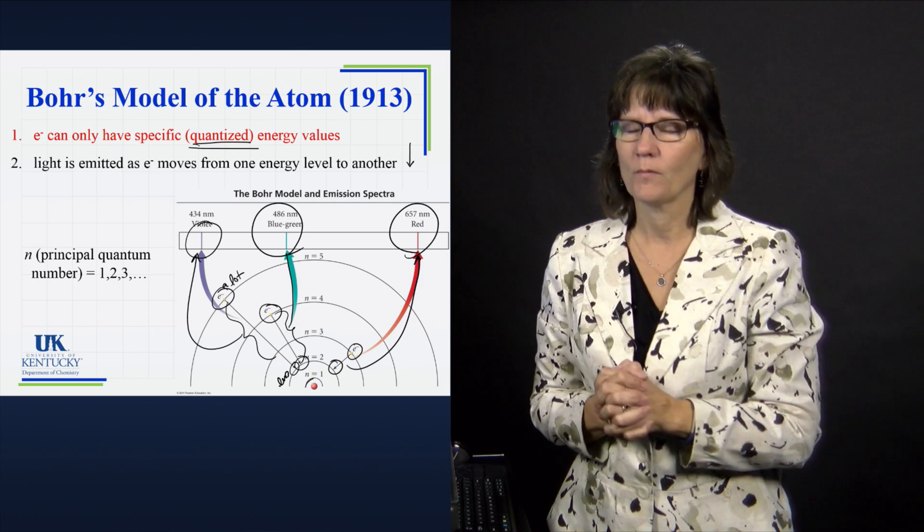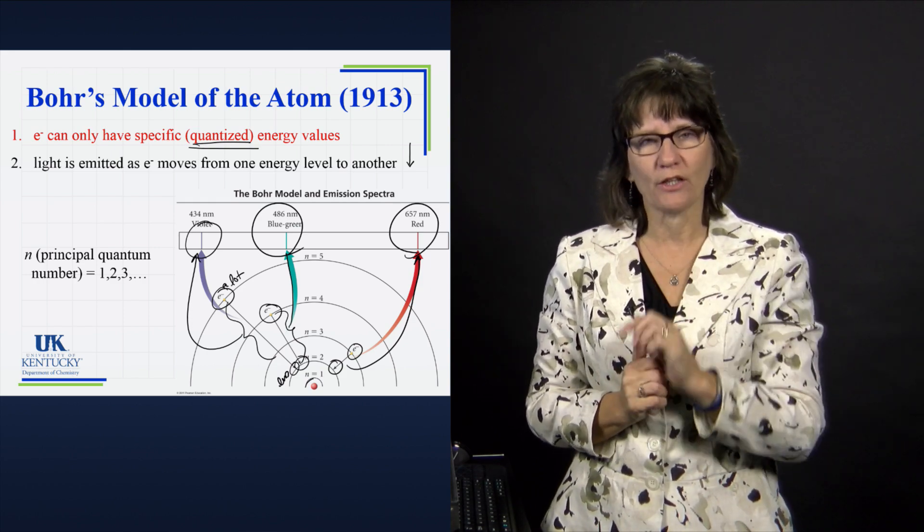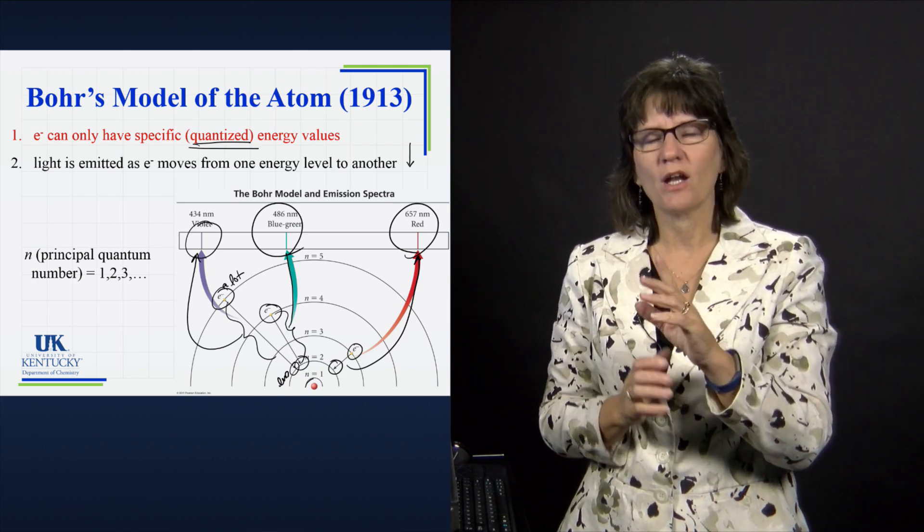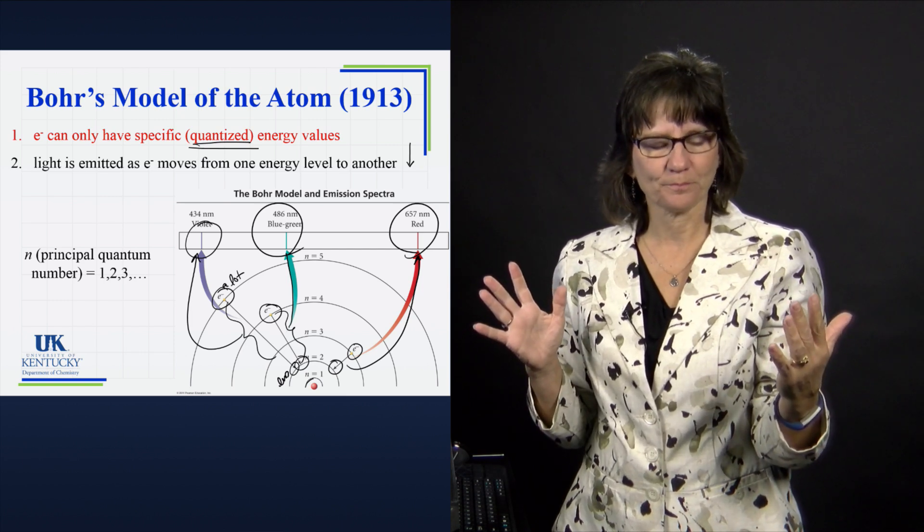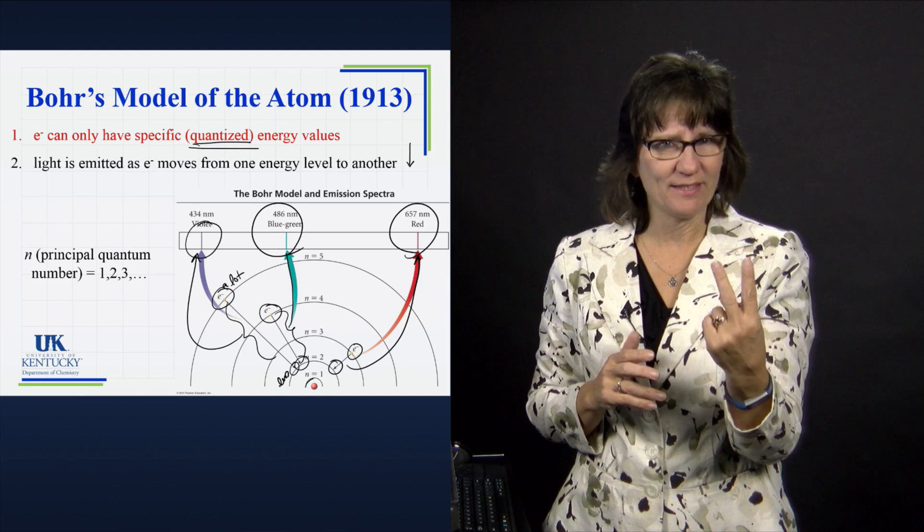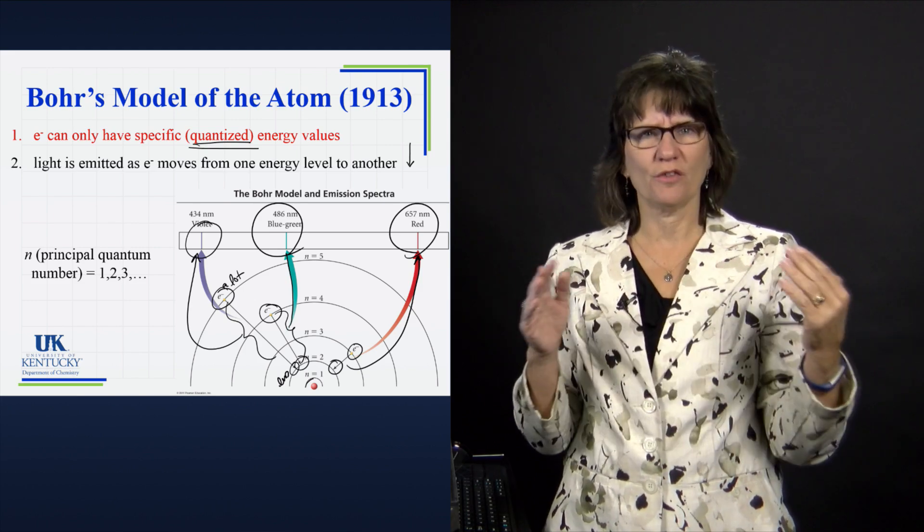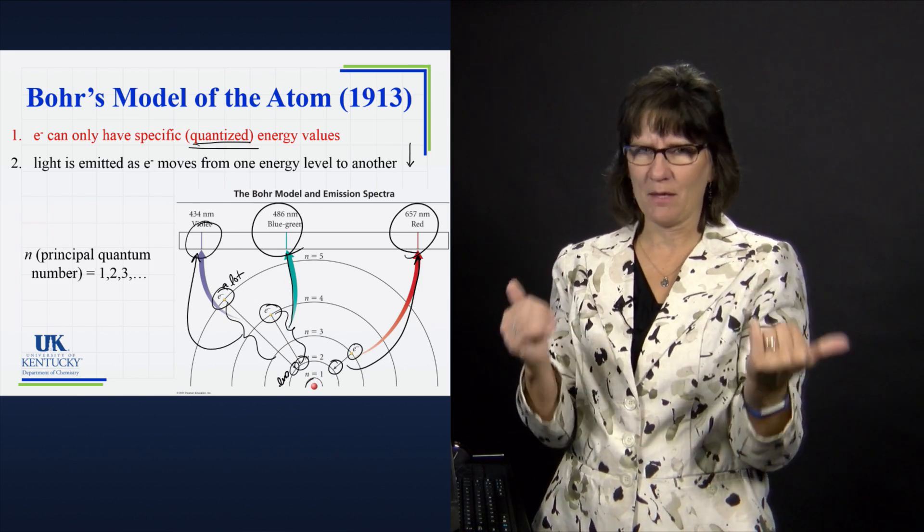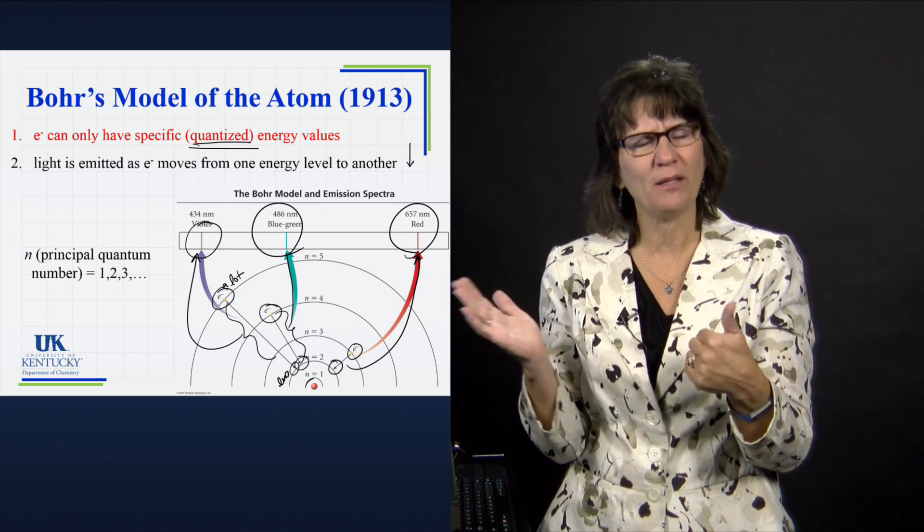The problem is with the hydrogen atom it's only got one electron and with one electron it's a very simplistic model. As soon as you put a second electron in there, it's not simplistic. And we have all sorts of different wavelengths of light that can be emitted that can't be simply explained by this. So we've got to keep on working.